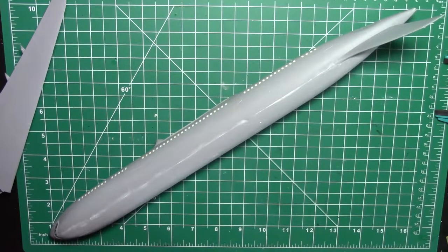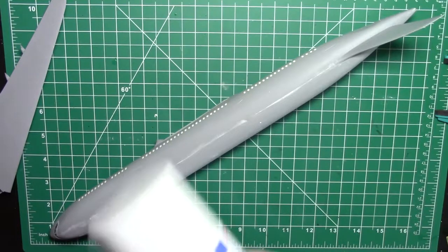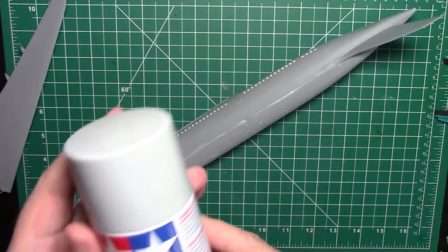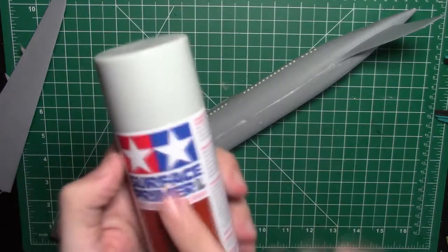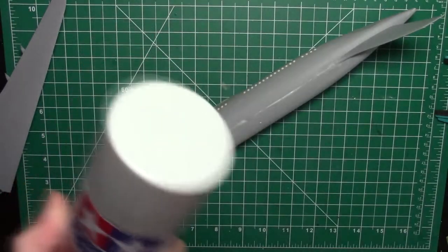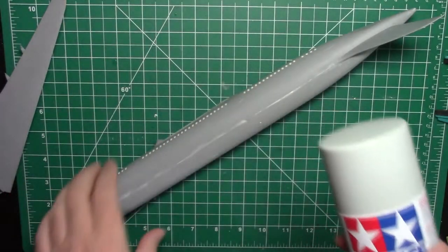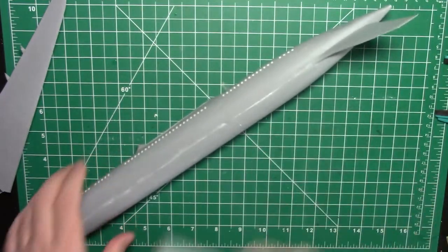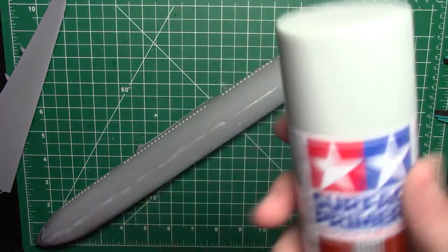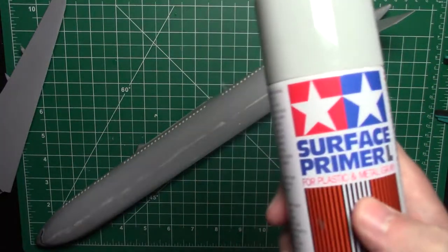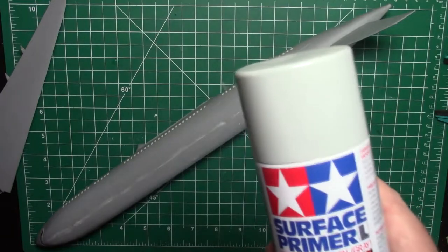I've had this grey Mr. Surfacer primer for, I don't know, maybe a couple of years or so. Never used it. And I figured, you know what, let's just spray it with this because it's going to be a big lump. And where I'm getting the airbrush out and spraying all this stuff, it'd be easy just to spray it real quick with this stuff. So as always with spray paint, I'm going to spray it outside in the fresh air.